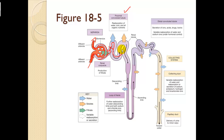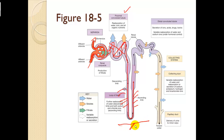As filtrate moves through the proximal convoluted tubule, it becomes more and more concentrated. Once the body has taken what it wants, it's waste and continues on. In the loop of Henle, we get an opportunity to pull water from the filtrate. The descending limb is permeable to water, allowing further reabsorption of water. The ascending limb handles sodium and chloride ions, moving them in and out as necessary based on the body's balance needs.